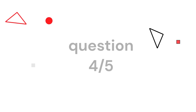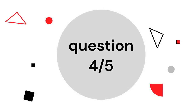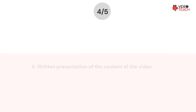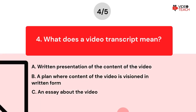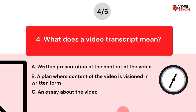Question number four. What does a video transcript mean? Option A: Written presentation of the content of the video. Option B: A plan where the content of the video is visioned in written form. Option C: An essay about the video. Now you have about 15 seconds to think about your answer.